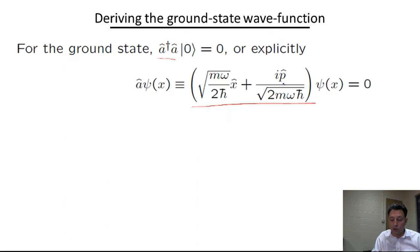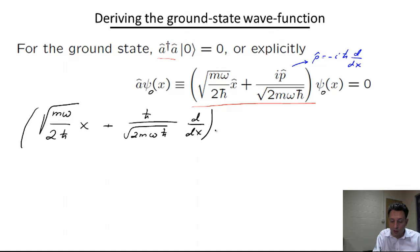I'm going to write down explicitly the form of the momentum operator and position operator. In real space, the position operator is just a multiplication operator, while the momentum operator is minus i h-bar d over dx. Therefore, the equation for psi nought becomes the following: square root of m omega over 2 h-bar times x plus h-bar over 2m omega times d over dx acting on psi nought, and this whole thing must equal zero.